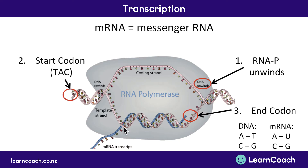What actually happens is the mRNA comes along and sees a C, matching it with a G, or sees a G and matches it with a C. Alternatively, it might see an A and match it with a U rather than a T, or it could see a T and match it with an A. That's how the messenger RNA codes in with the DNA strand.